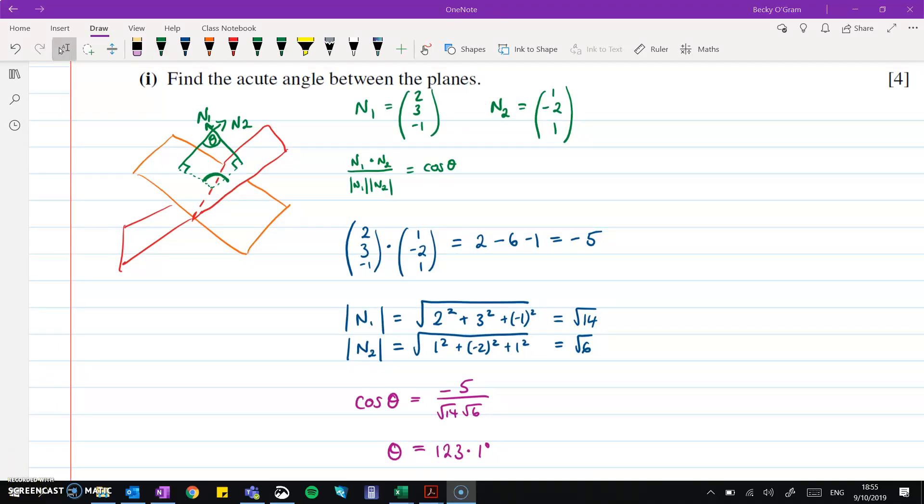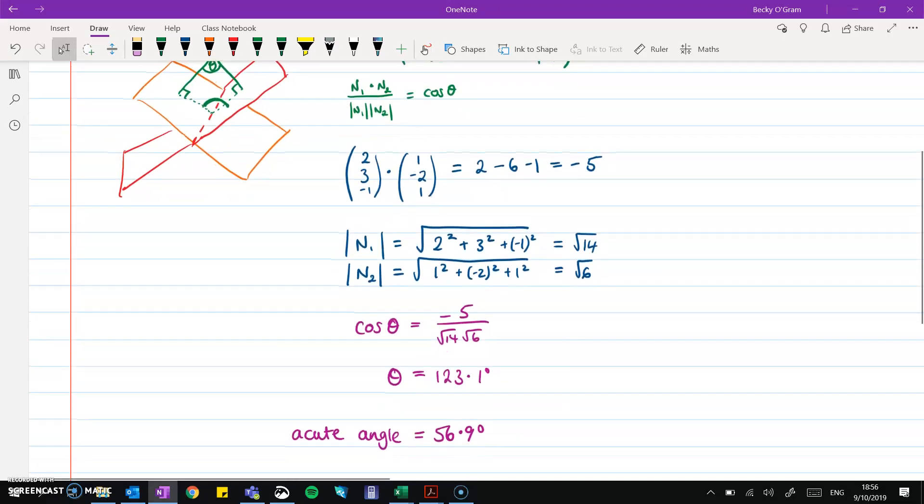And final check, that does give us the angle between the normals. So now we need to find the acute angle between the planes. So if that's the angle between the normals, we do 180 minus that, and we'll get the angle between the planes. And then just double check you've got the acute one. If you didn't, you just subtract it from 180 again. So here we've got the acute angle is 56.9 degrees.